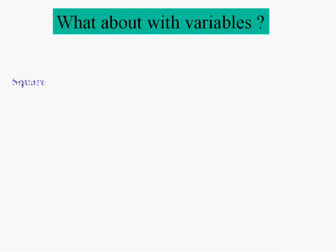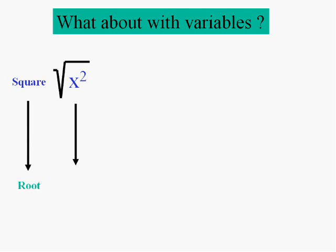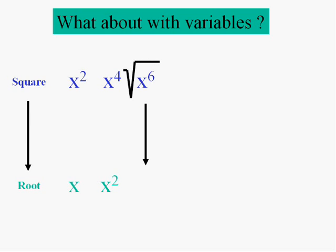This is algebra, so we're going to have to do this with letters also — but it's not that bad. x squared is a perfect square because I can take the square root of x squared. The square root of x squared is x. The square root of x to the fourth is x squared. The square root of x to the sixth — yep, it's x to the third. Because x to the third times x to the third is x to the sixth. So x to the sixth is a perfect square.